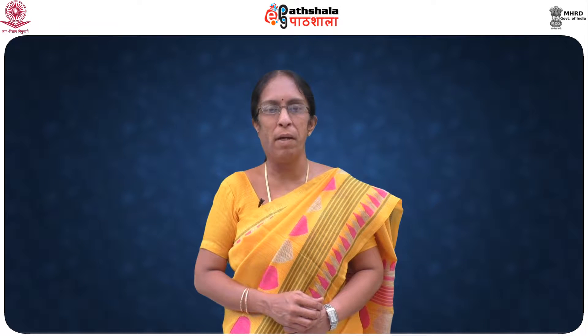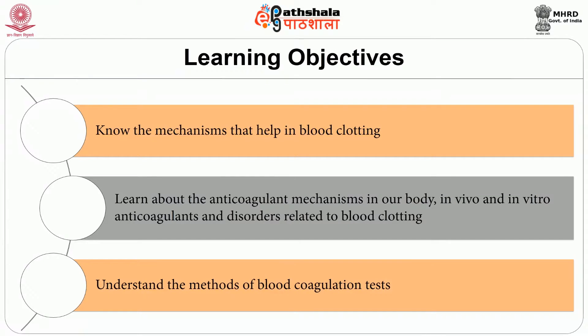Coagulation is highly conserved throughout biology. In all mammals, coagulation involves two things: a cellular component, mainly by the platelets, and a protein component by the coagulation factors. Coagulation begins almost instantaneously after an injury to the blood vessel wall, which produces damage to the endothelium lining the vessel wall. This module aims to make you know the mechanisms that help in blood clotting, the anti-coagulant mechanisms in the body, both in vivo and in vitro anti-coagulants, disorders related to blood clotting, and methods of blood coagulation tests.